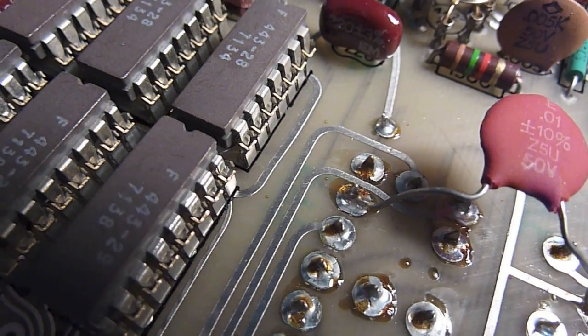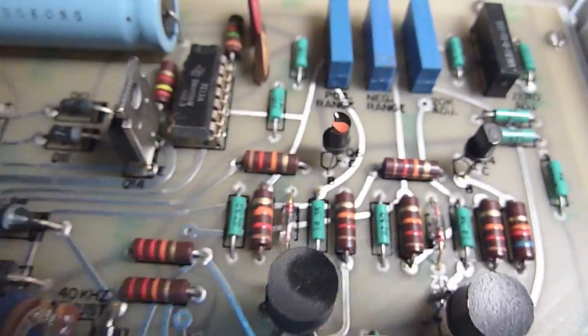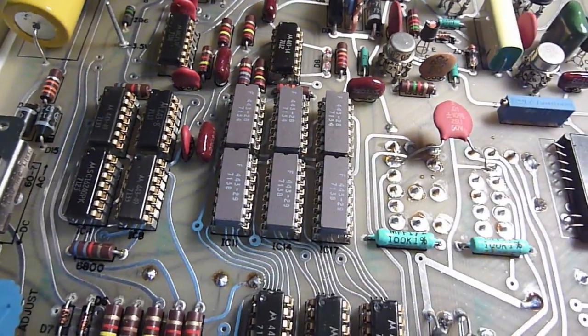So that just makes it harder to solder everything when you build the kit. Anyway, it's a pretty cool. Everything's labeled. Heathkit was awesome. All right, thanks.